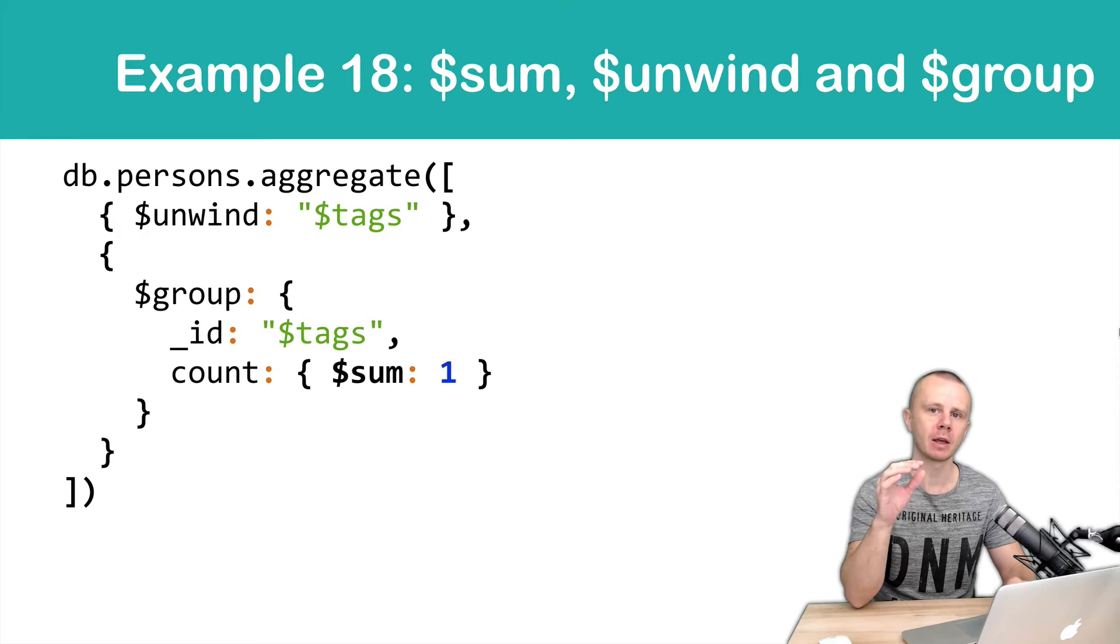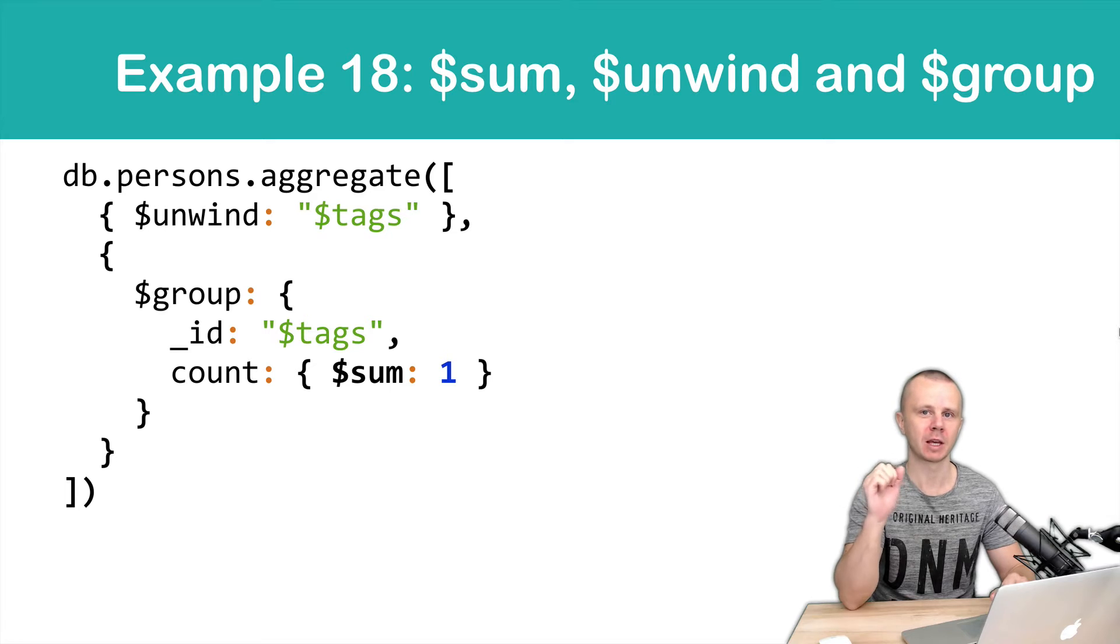Instead of an array, resulting documents will have separate elements as the values. Then we will perform grouping by the same field and count the number of unique elements of the input array. This is a very common usage of the sum and unwind operators.